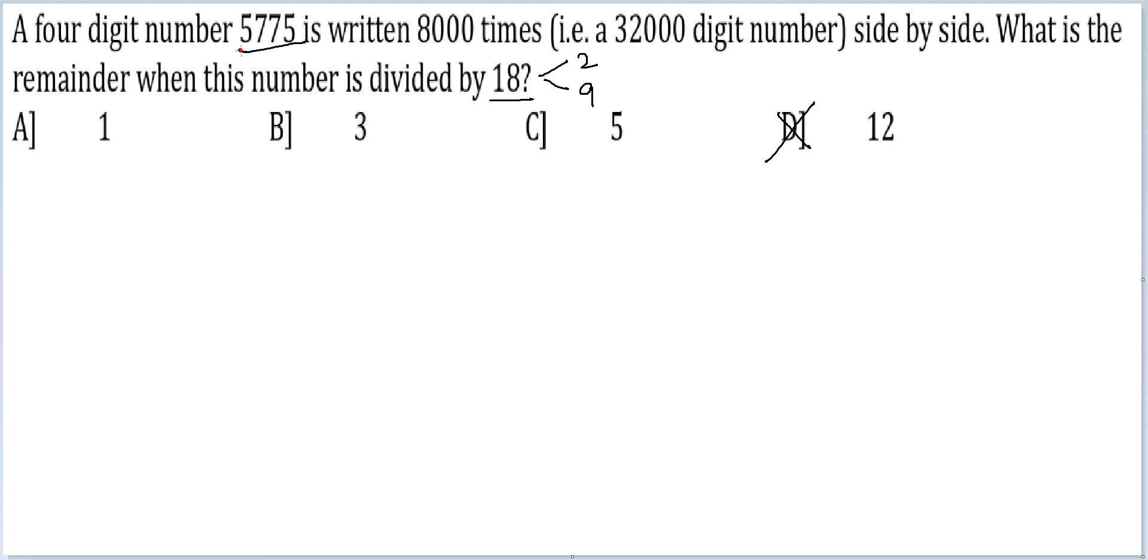Additionally, the sum of digits you get here, 5 plus 7 plus 7 plus 5, is 24. Therefore the final answer you get will necessarily be a multiple of 3. So the remainder you end up getting will be an odd number that is a multiple of 3.